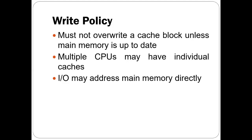Another important issue is that IO may address main memory directly. In some systems, IO devices have direct access to main memory, so a word or block can be updated by an IO device into main memory, making the particular cache entry invalid. That is the issue with write policy — we need to make sure that when overwriting a line in cache, main memory is first updated to avoid an inconsistent view. There are two techniques: write through and write back.